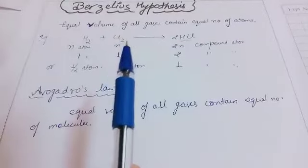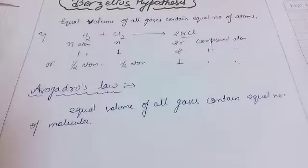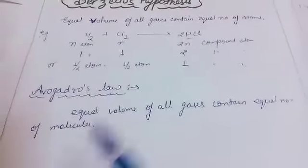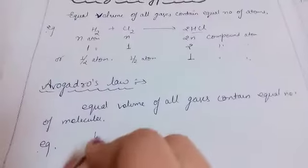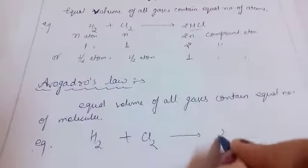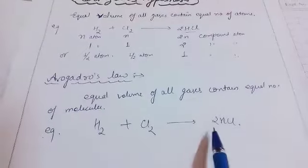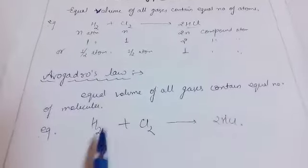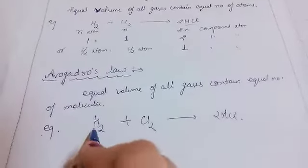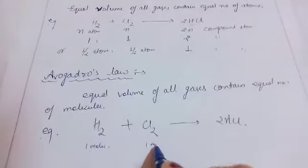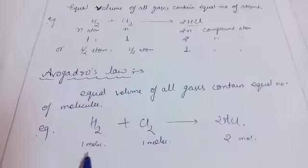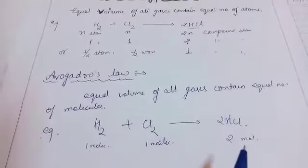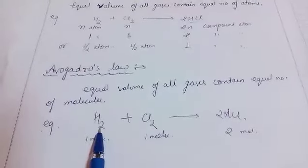Now applying this to the same example: H₂ + Cl₂ → 2HCl. If the volume is 1 for H₂ and 1 for Cl₂, and 2 for HCl — since volume equals number of molecules, that means 1 molecule of H₂, 1 molecule of Cl₂, and 2 molecules of HCl. Volume is proportional to the number of molecules, so 1 volume means 1 molecule.